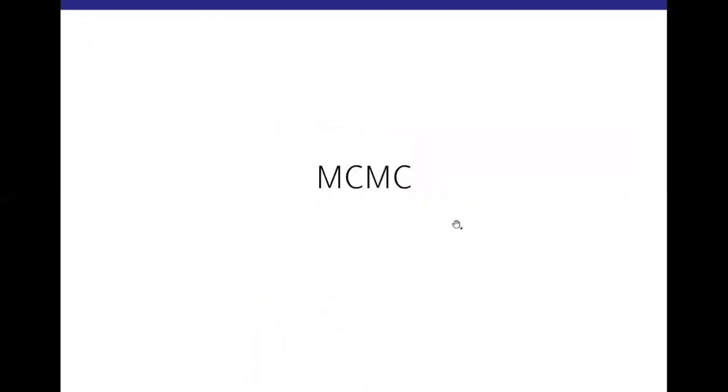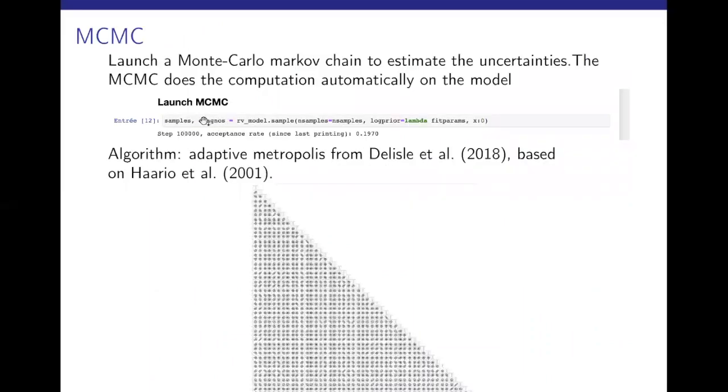A word about the MCMC. Here in the context of the DACE notebook, it's really easy to launch. It's literally one line of code because you have already defined your model. And you might just want to specify the priors as the log priors and then you run the MCMC. And in that case, it is an adaptive metropolis, which is based on Hario et al. So, it's not like MC. It's a different kind of MCMC, but it works very well. You see that here, it can handle a lot of parameters. And the convergence properties are really good.